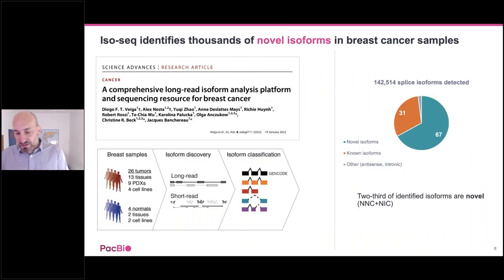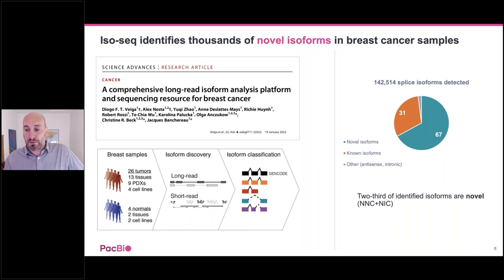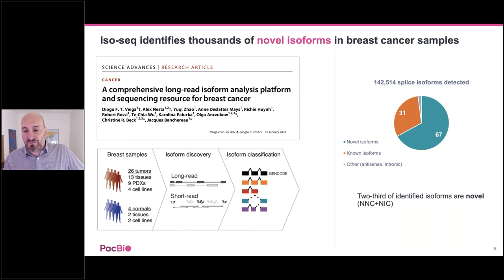A recent publication from the Jackson Lab in the U.S. utilized both long-read and short-read sequencing to better understand the RNA isoform landscape of breast cancer — really the first true comparison of these two technologies with regards to isoform discovery. They sequenced 26 tumor samples and performed both short-read and accurate long-read RNA sequencing using the IsoSeq method. They discovered over 140,000 splice isoforms using the long-read methodology, and two-thirds of these new isoforms were completely novel, showcasing the ability of long-read RNA sequencing to provide significantly more powerful isoform discovery.